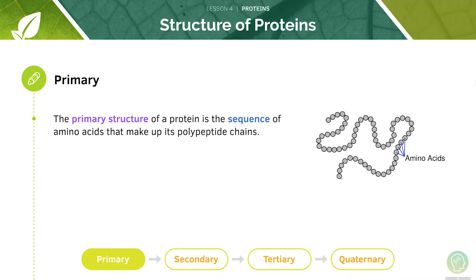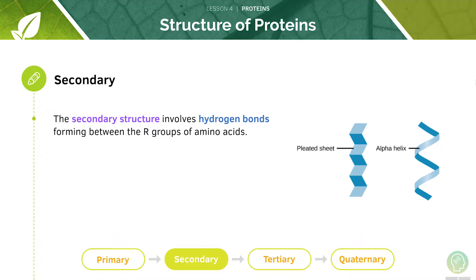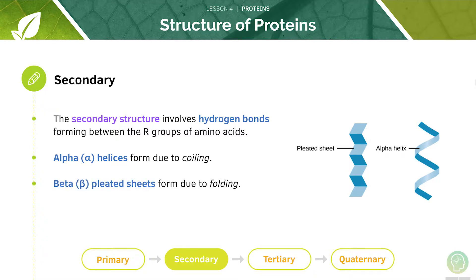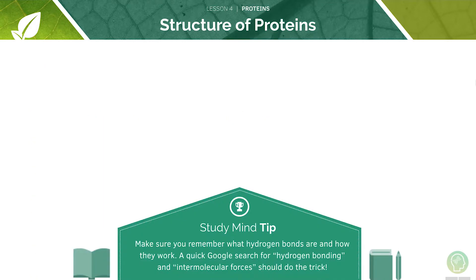The primary structure of a protein is the sequence of amino acids that makes up its polypeptide chains — it's flat and 2D. In the secondary structure, hydrogen bonds between the different amino acids in the chain are responsible. Coiling will cause alpha helices and folding will form beta pleated sheets. Make sure you remember how hydrogen bonds work.